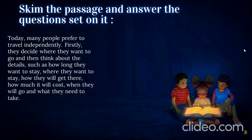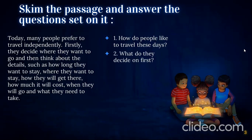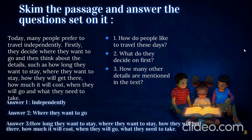To skim this passage we need to find the answers to three questions. First question: how do people like to travel these days? Second question: how do they decide first? How many other details are mentioned in the text? So we need to skim this passage to find the general information. For the first question, the answer is: people travel independently.